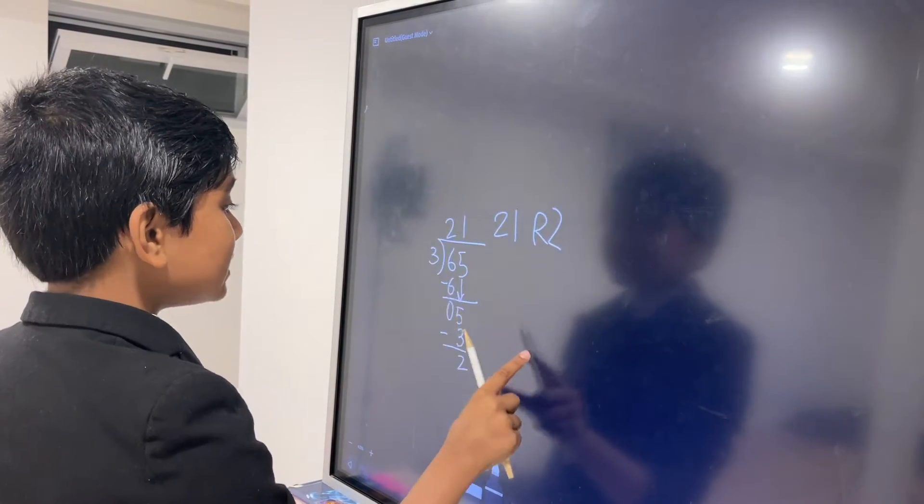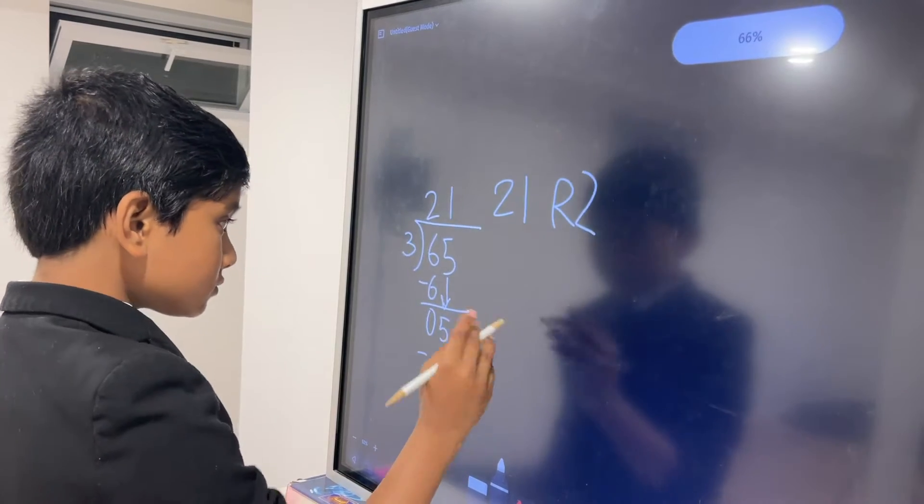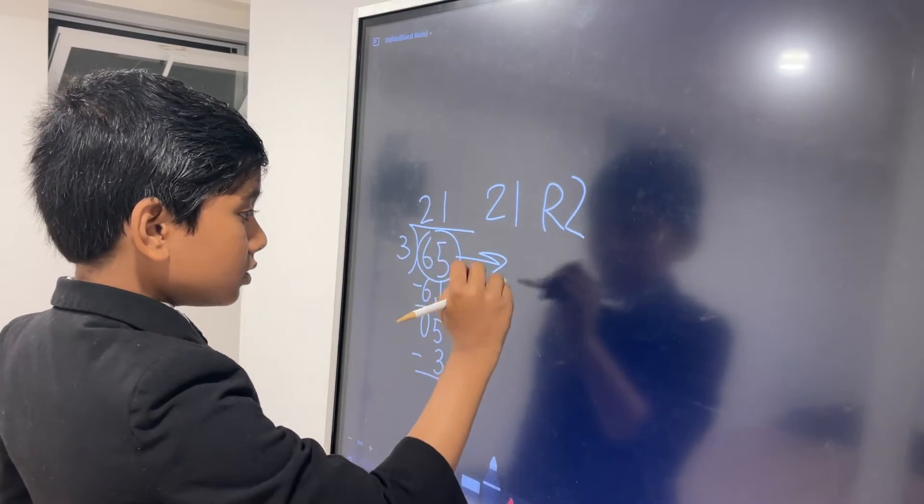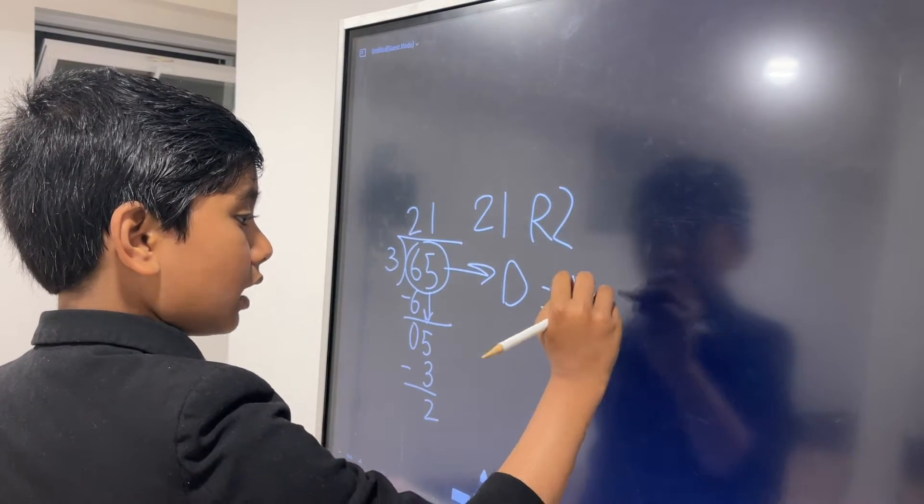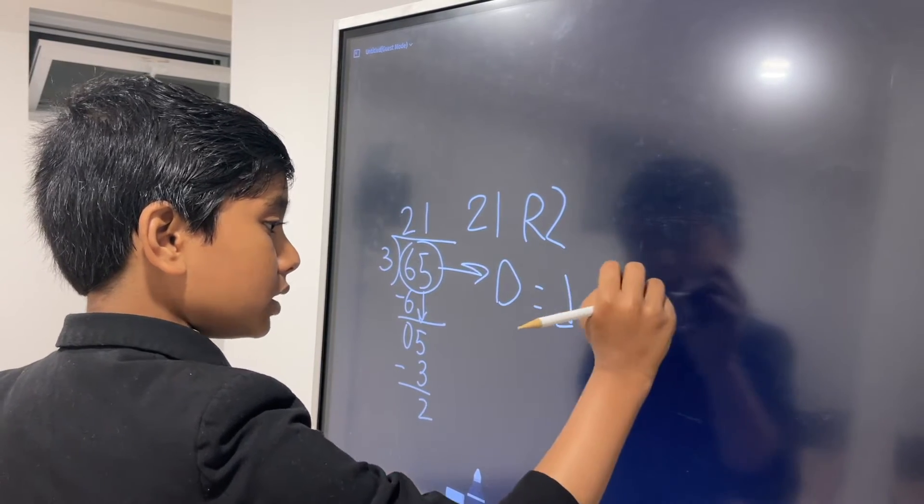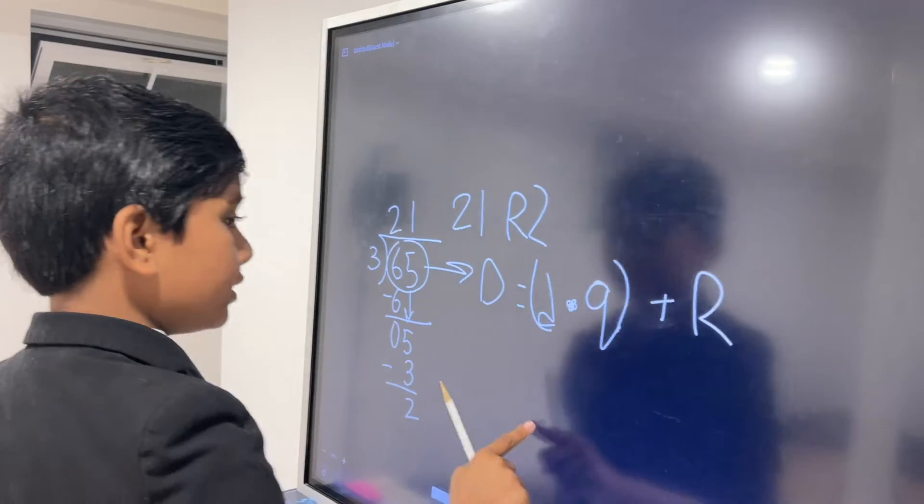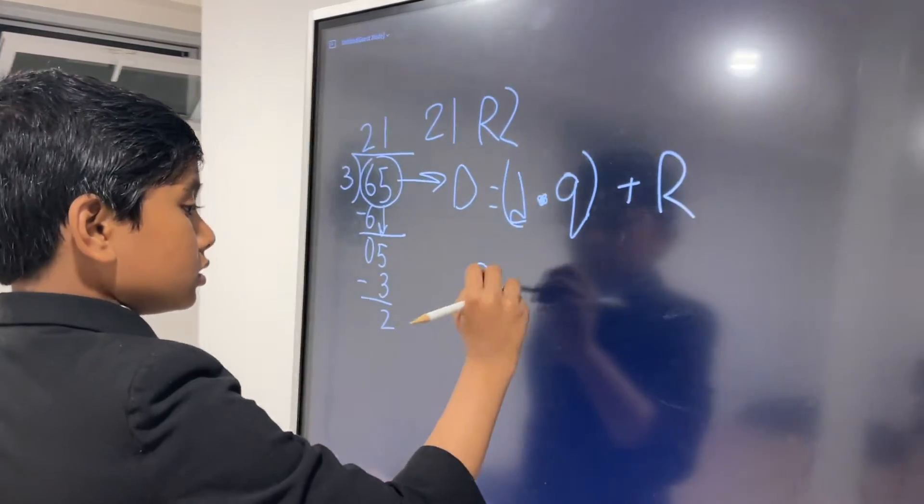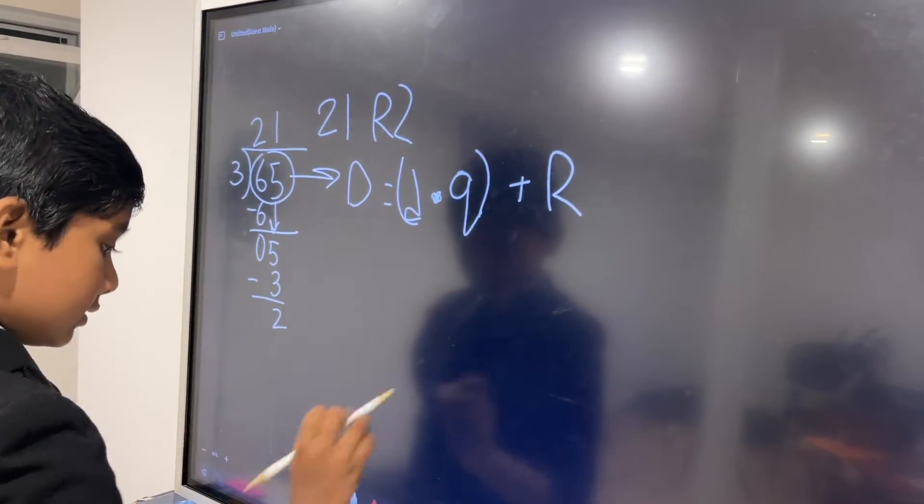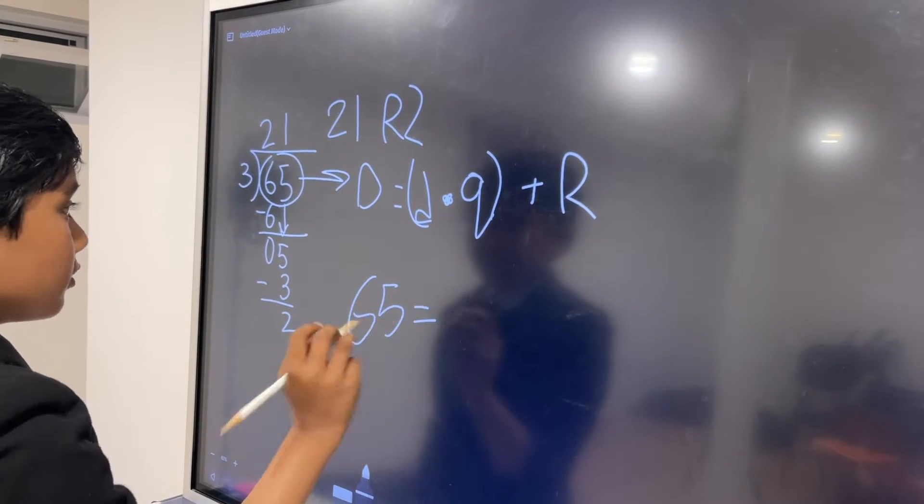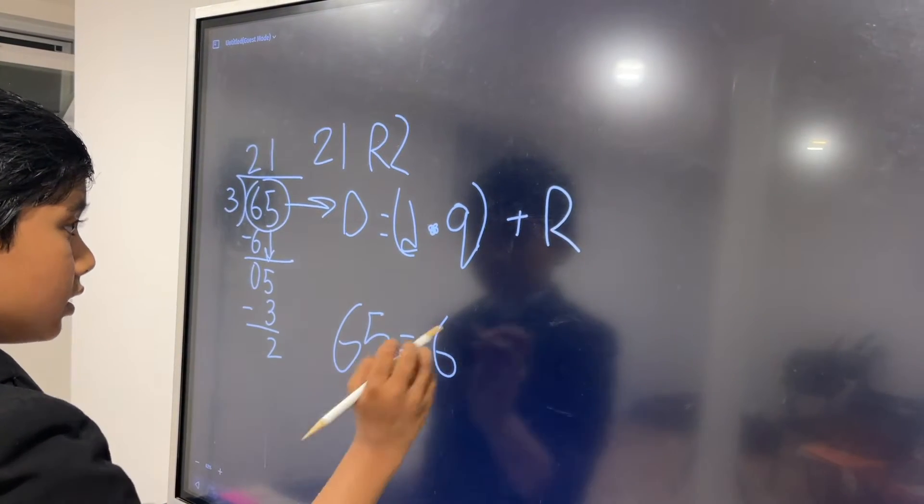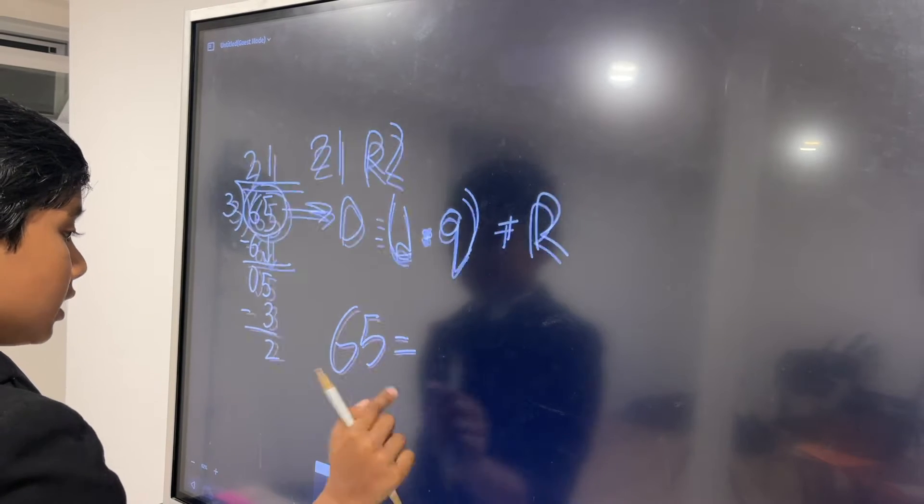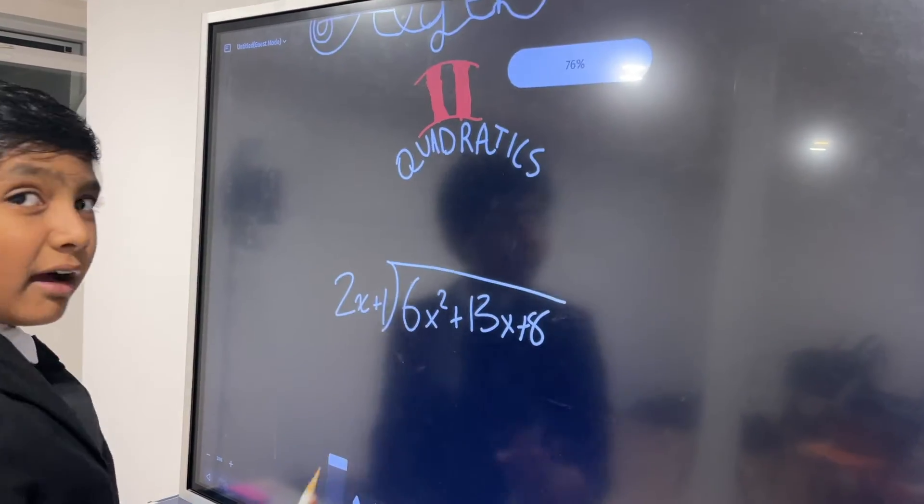And you can test this out by doing dividend is equal to divisor times the quotient plus the remainder. So that would mean that 65 is equal to divisor times the quotient plus the remainder.